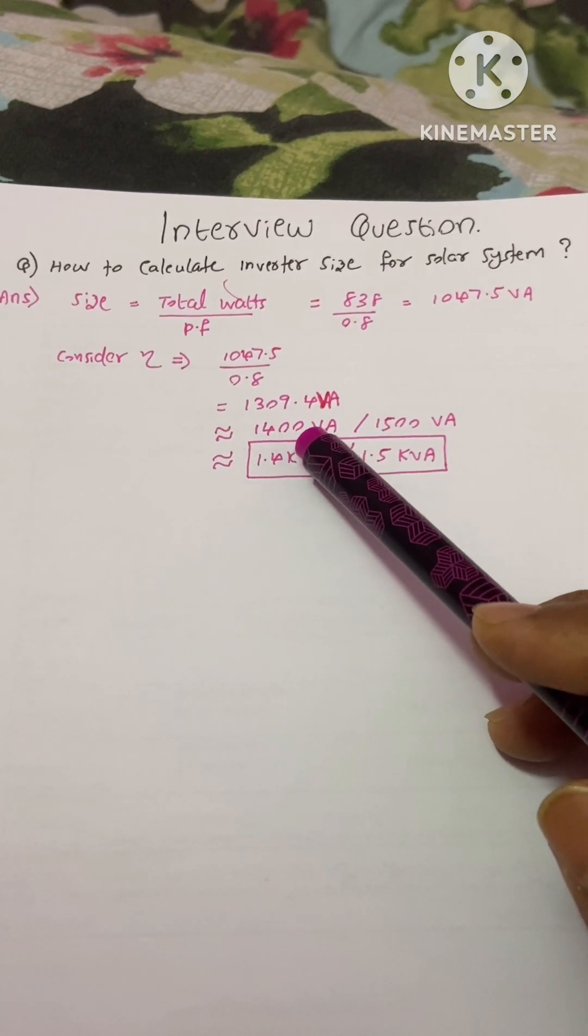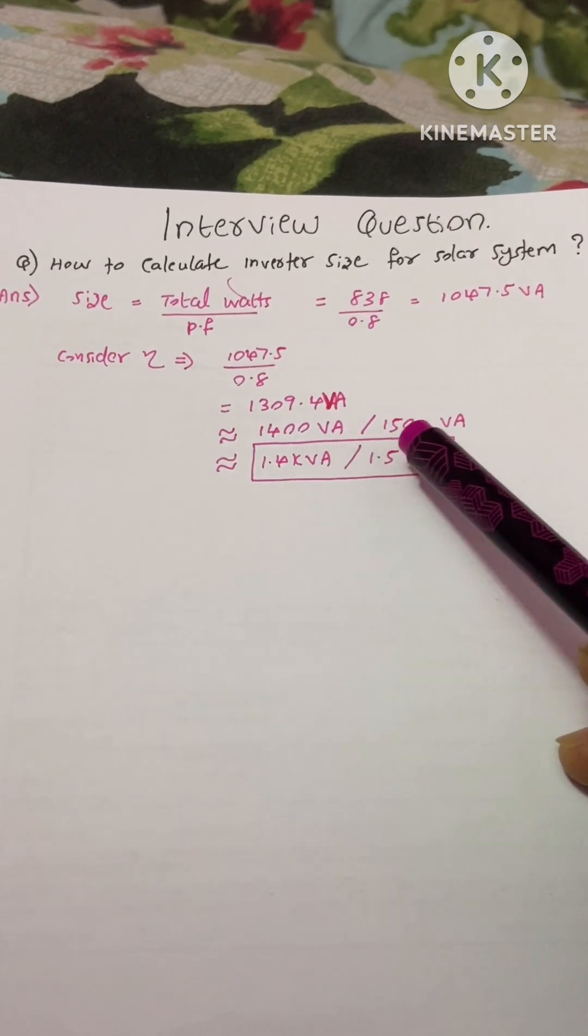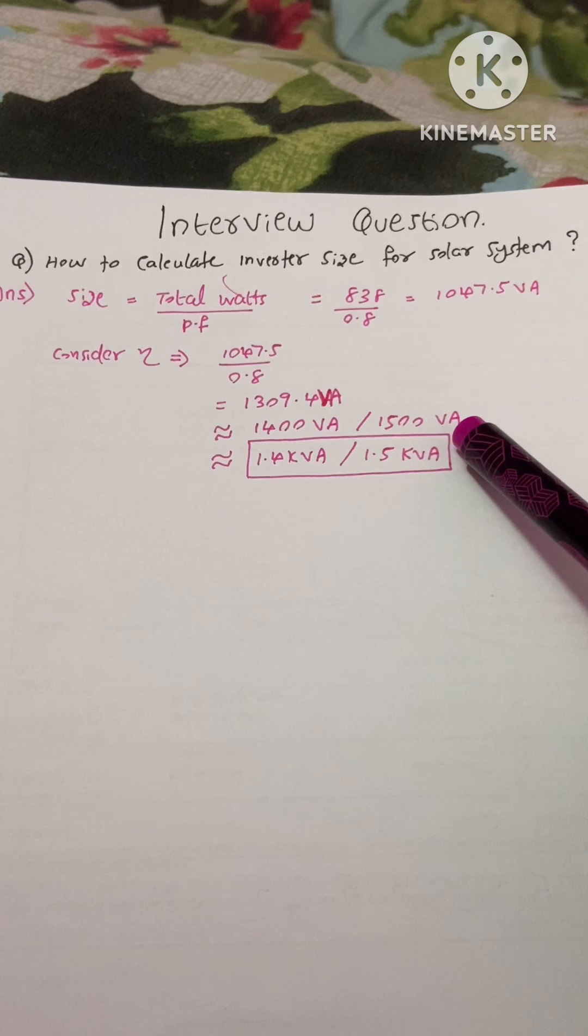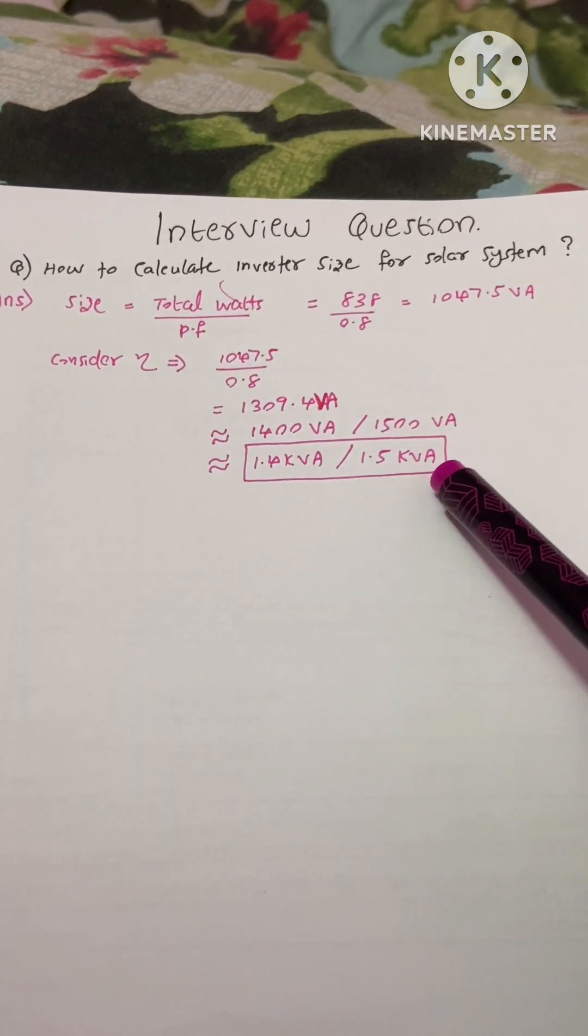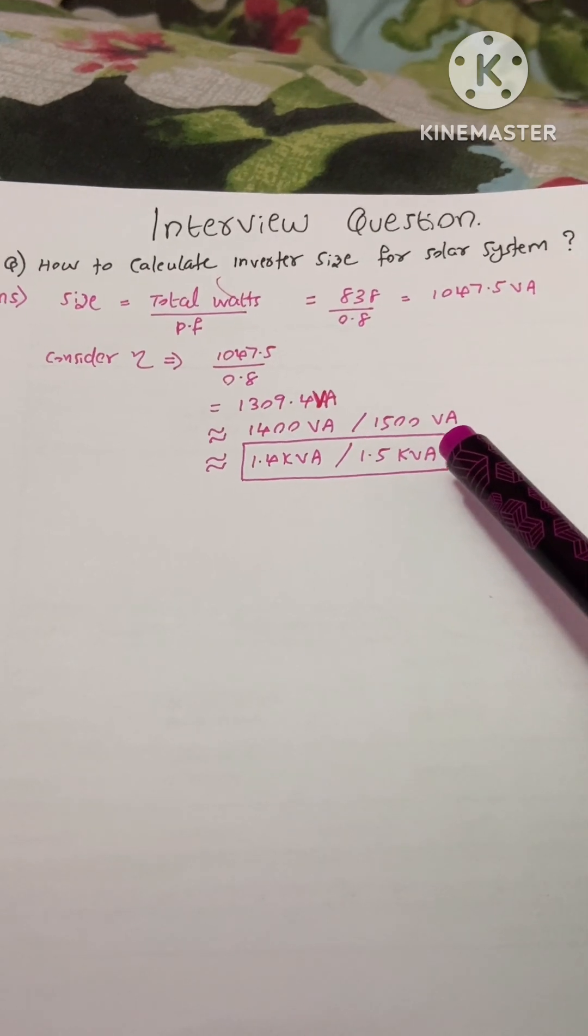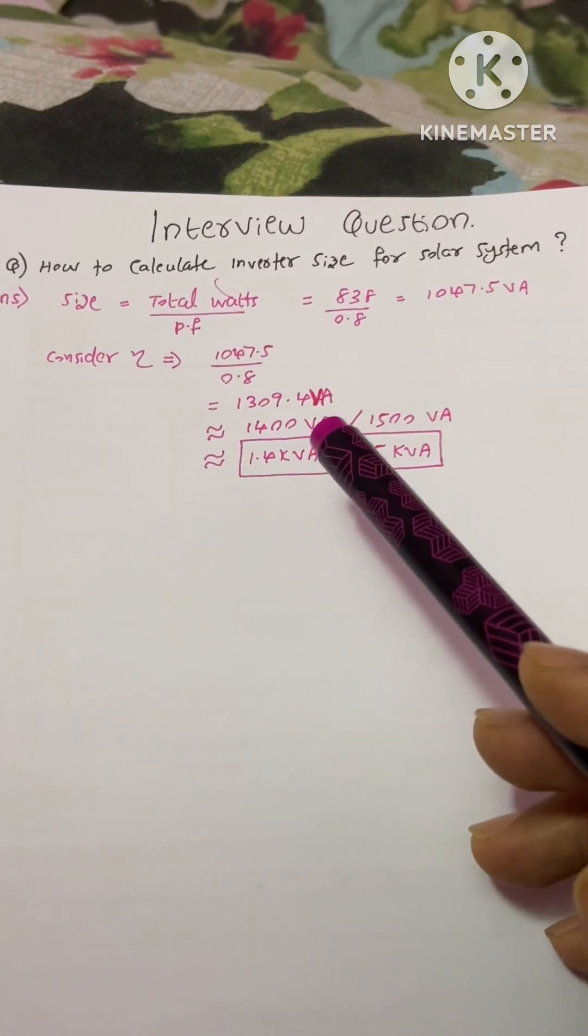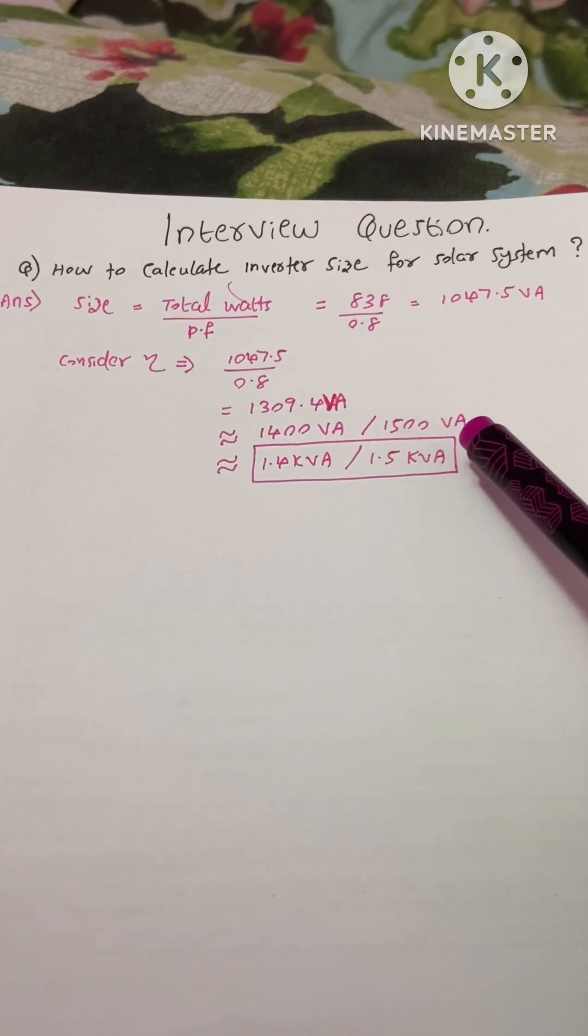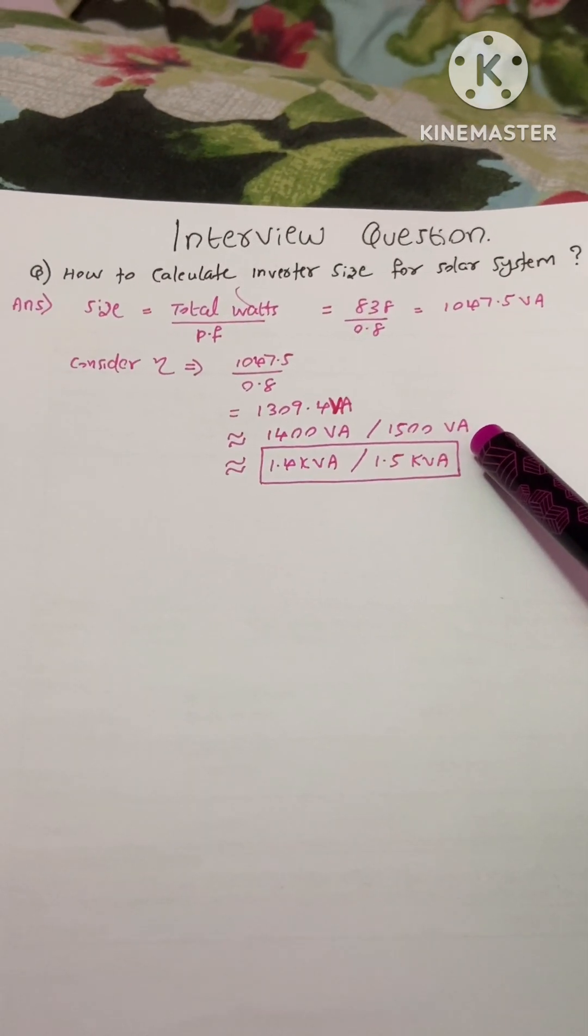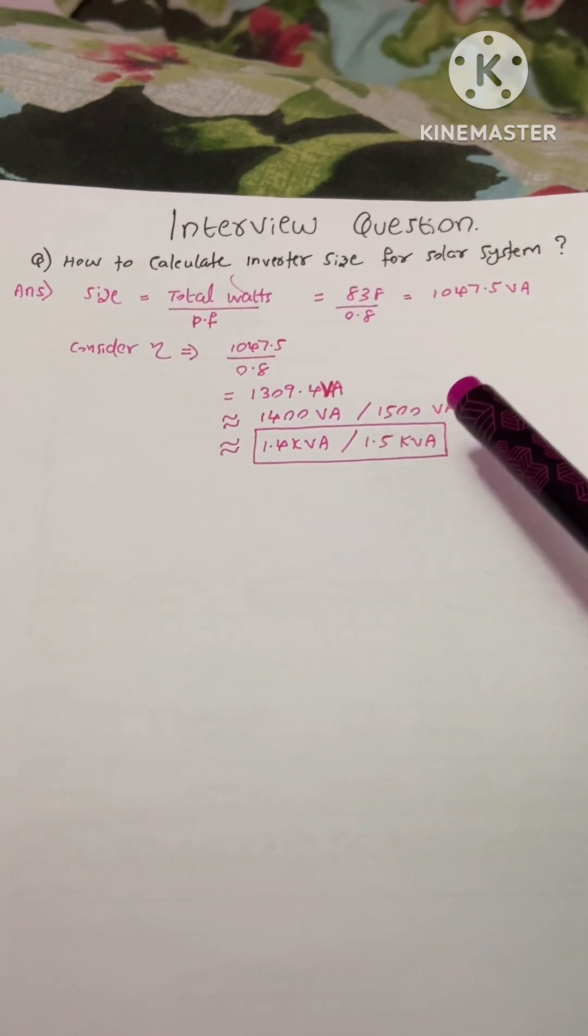That means 1.4 kVA or 1.5 kVA. Suppose you will not get a 1400 VA inverter, then you need to select a 1500 VA inverter. If you want to see the whole video of the solar system sizing, please click the link below.